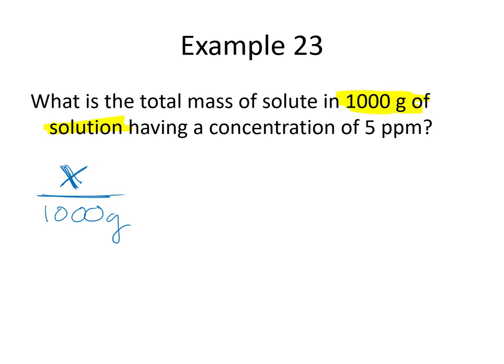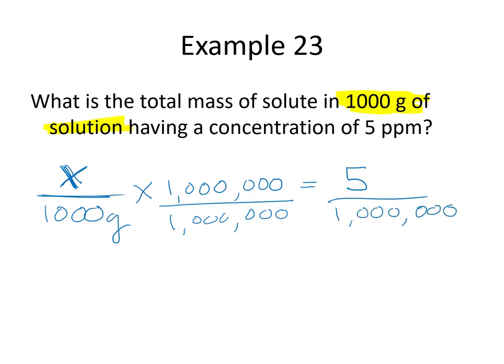So this would be x over 1,000 grams times 1,000,000 equals 5. So the way that I'm going to attack this is I'm going to divide both sides by 1,000,000 to get rid of it. And then I will multiply that answer by 1,000. And that gives me an answer of 0.005 grams because I'm essentially cross multiplying to solve in this instance. And that is the total mass of my solute.